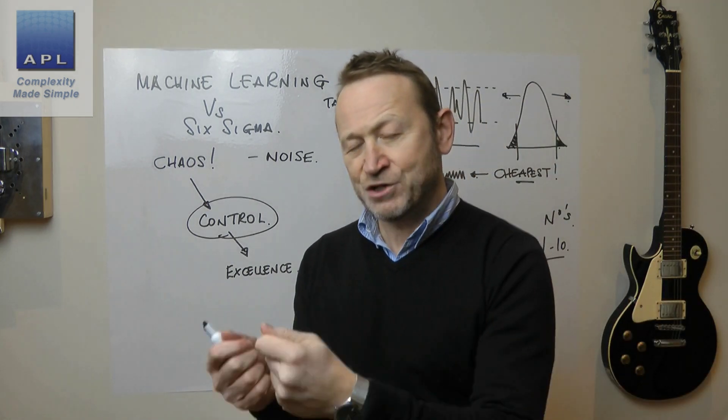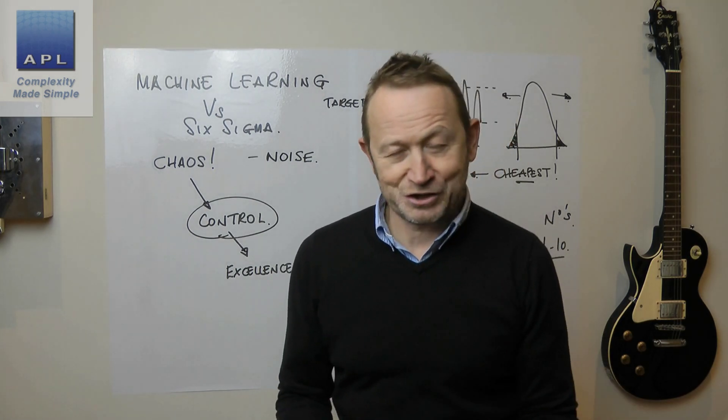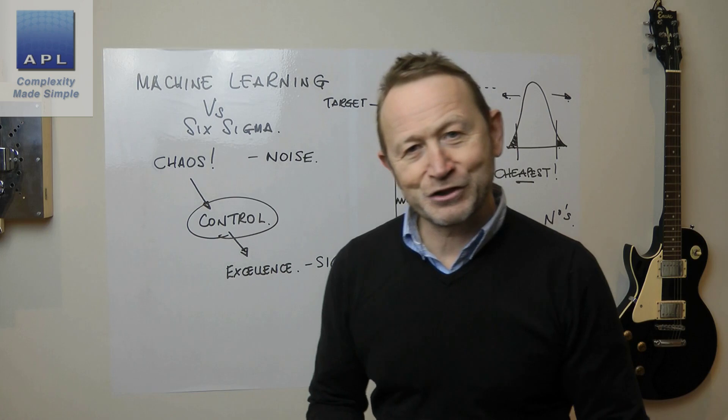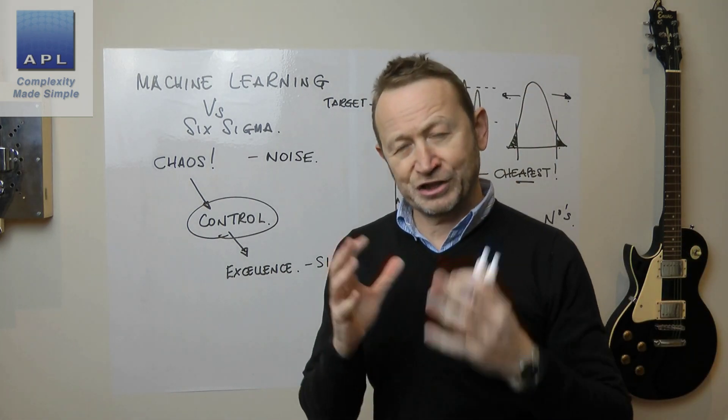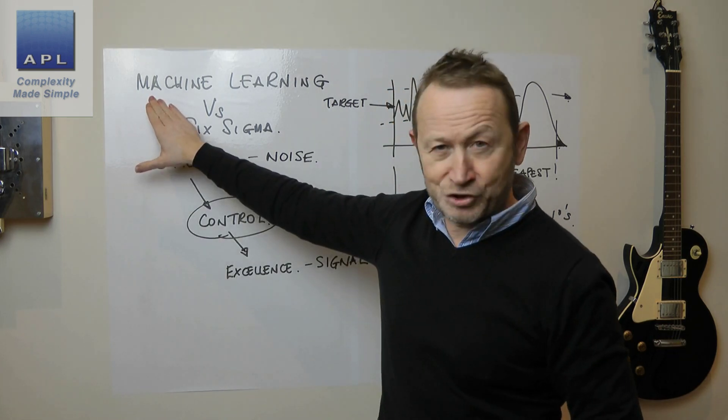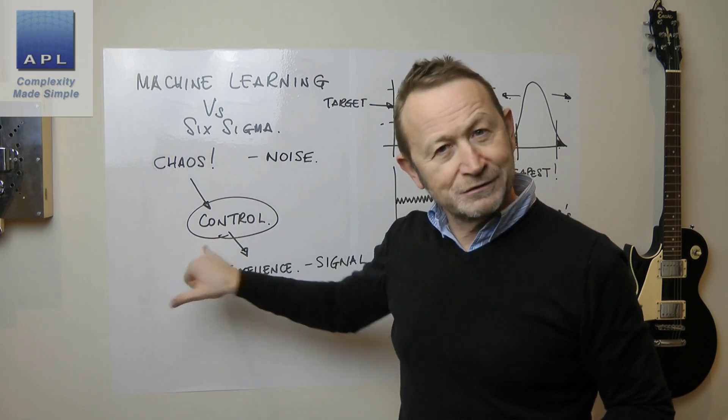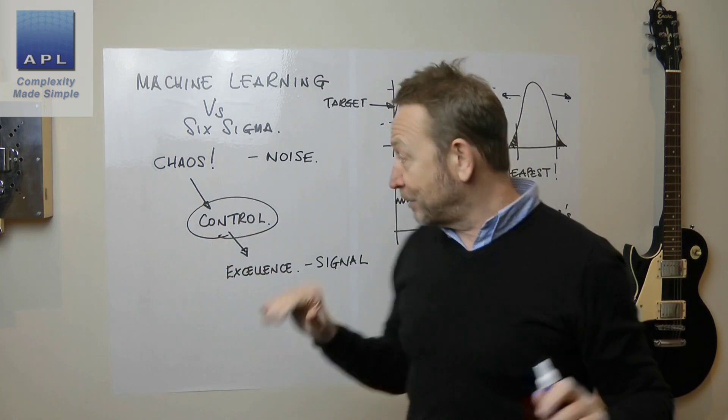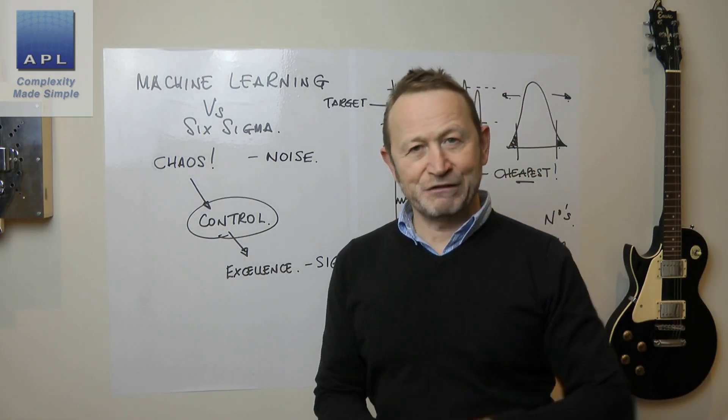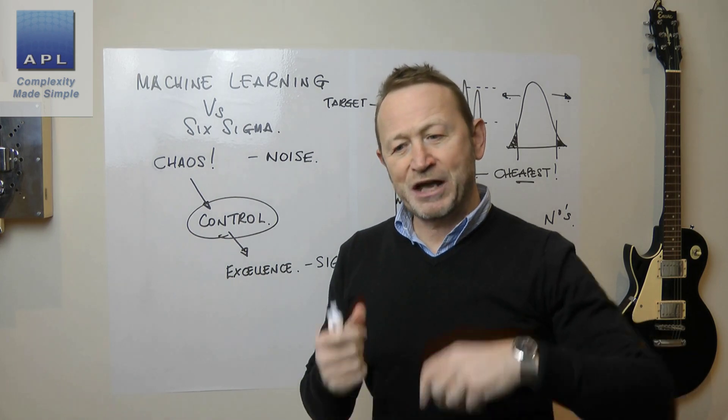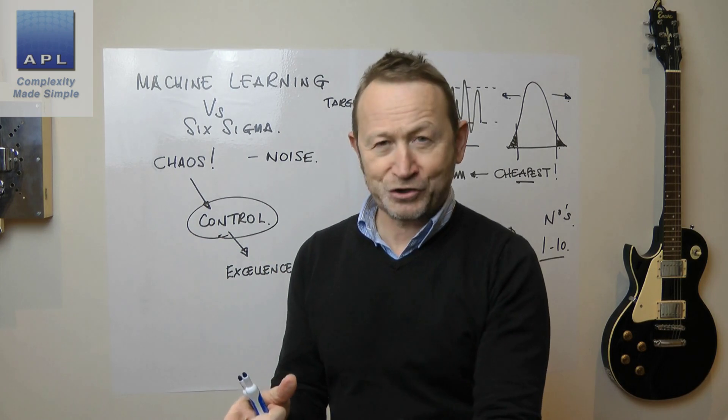Now, the question is, does the machine learning know this? And I don't know whether it does. I didn't get a chance to ask the question. But my only advice is, if you're going to give this over to the machine, there's a number of things you've got to be careful of. What about control? Machine learning can't do that. It's just trying to hit the target. And does it know how expensive each dial is? If it says, oh, well, I can optimize this process, if I just turn the air pressure up.